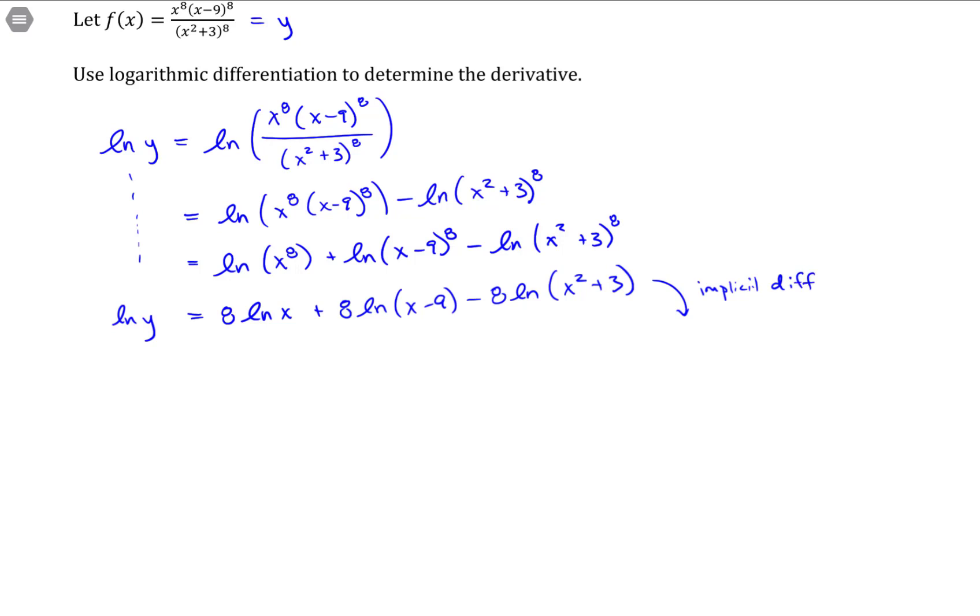Alright, so, the derivative of the natural log of y. It's involving the variable y, which means we have to use that chain rule property. So, it's 1 over y times dy dx, using the chain rule.